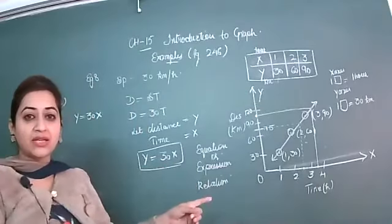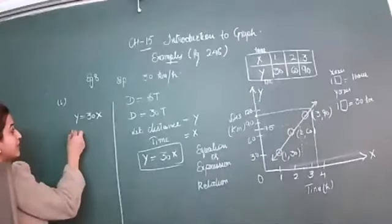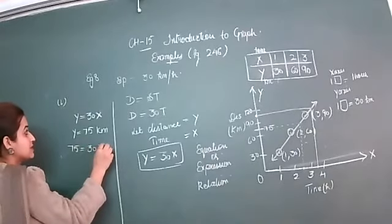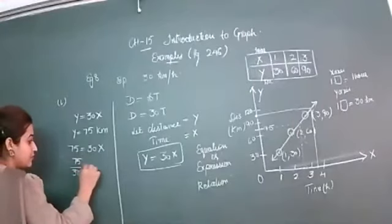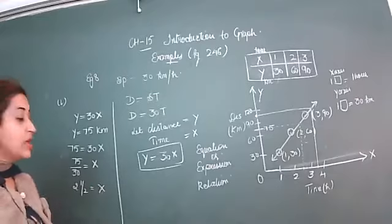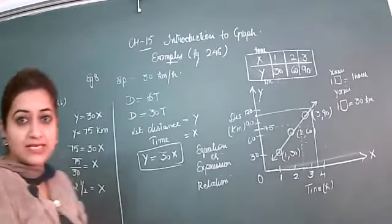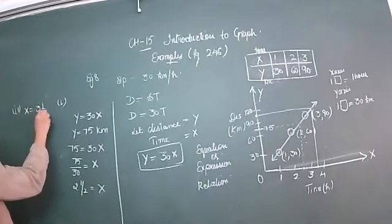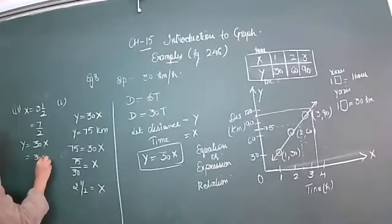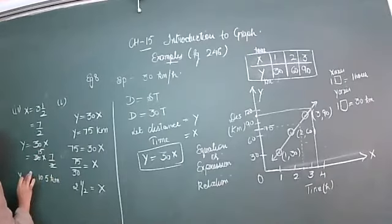Let's check the answers. For the first part, y equals 75: substitute into 75 equals 30x, so x equals 75 over 30, giving 2 and a half hours. For the second part, x equals 3 and a half, which is 7/2. Using y equals 30x: y equals 30 times 7/2 equals 15 times 7, so y equals 105 kilometers.